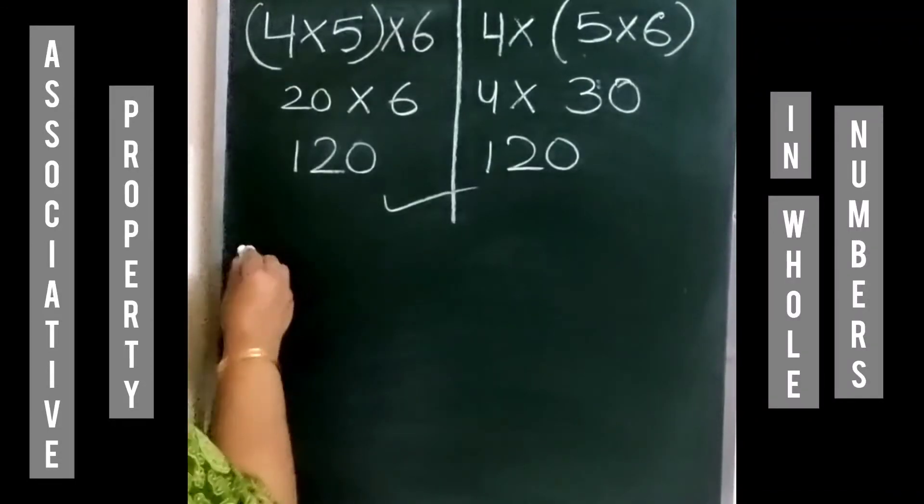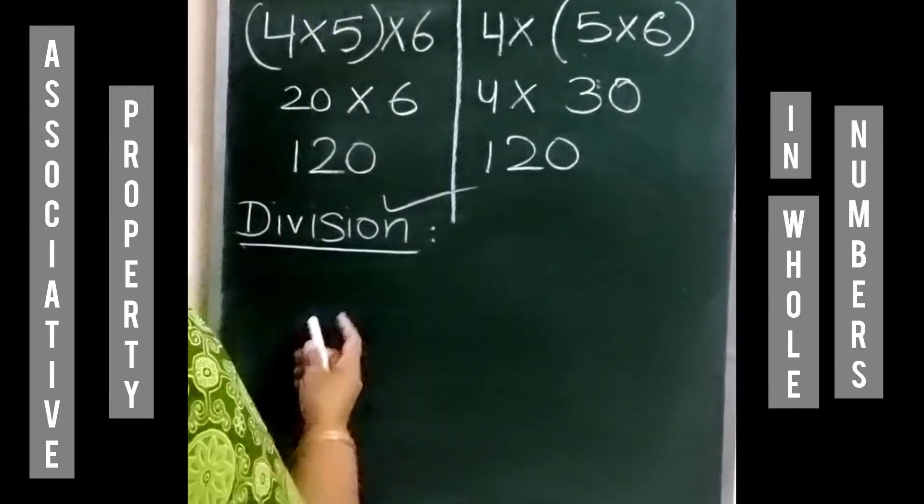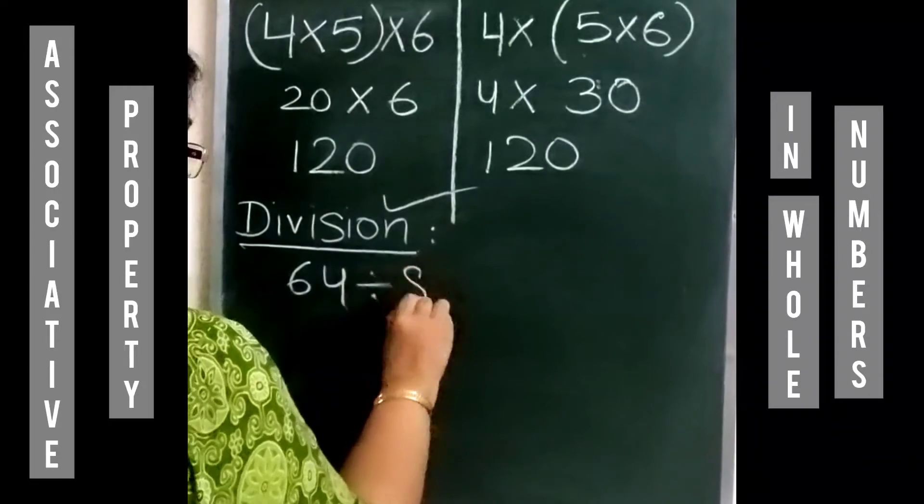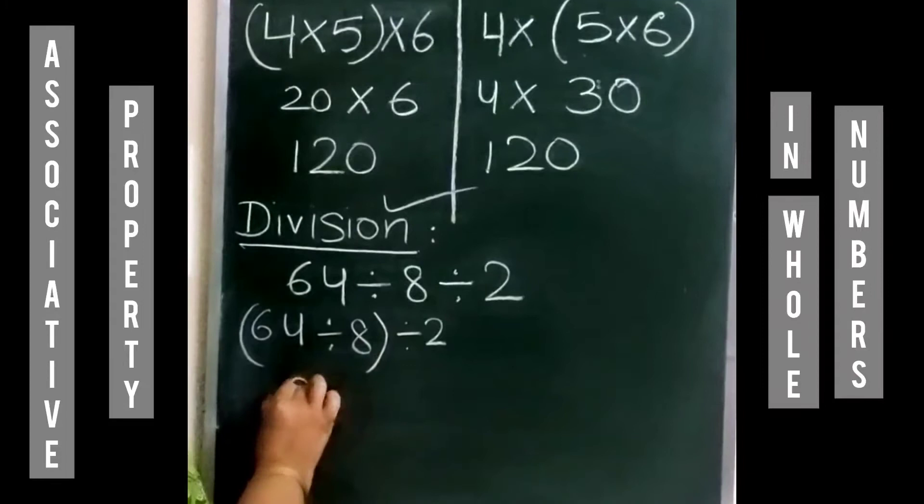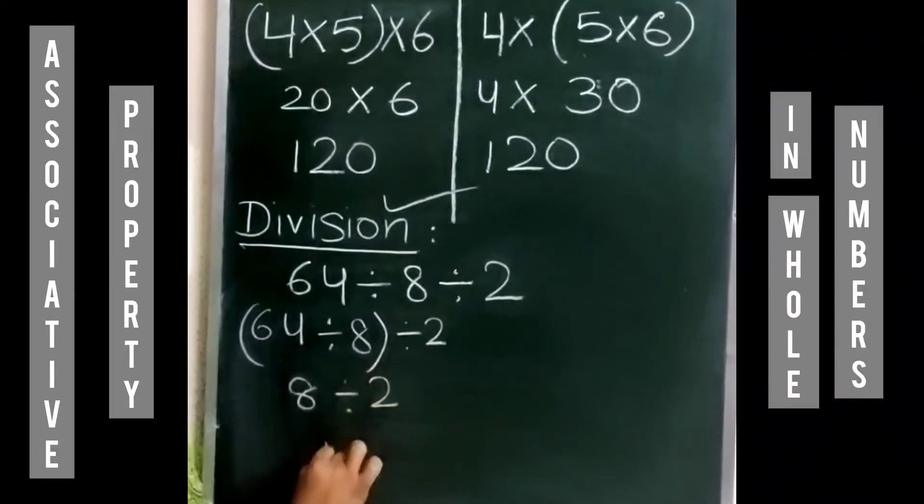But is it true for division also? Let us see. Let's take 64 divided by 8 divided by 2. 64 divided by 8 is 8, and 8 divided by 2 is equal to 4.